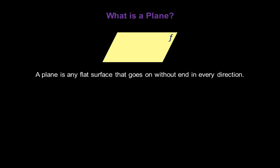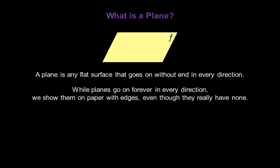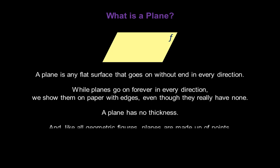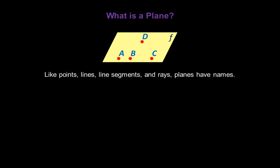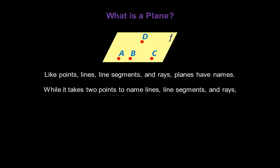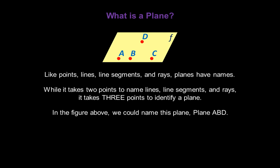What is a plane? A plane is any flat surface that goes on without end in every direction. While planes go on forever in every direction, we show them on paper with edges, even though they really have none. A plane also has no thickness. And like all geometric figures, planes are made up of points. Like points, lines, line segments, and rays, planes have names. While it takes two points to name lines, line segments, and rays, it takes three points to identify a plane. In the figure above, we could name this plane ABD.